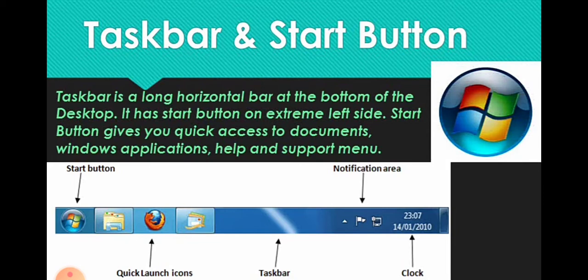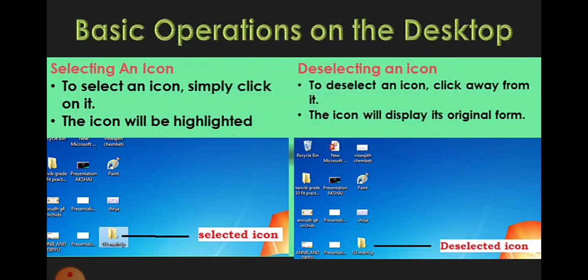There are a group of icons present in the taskbar and the start button. The task button controls the notification area, clock, the taskbar, and the quick launch icons — such as quick launch for Firefox, etc.